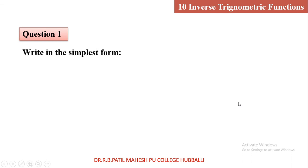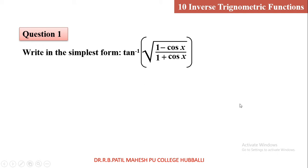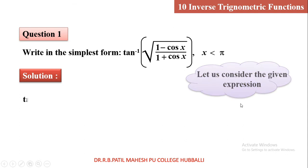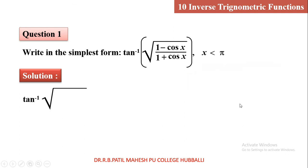Question number 1: write the simplest form of tan inverse of root of (1 minus cos x) upon (1 plus cos x), where x is less than pi. Let us consider the given expression as it is: tan inverse of root of (1 minus cos x) upon (1 plus cos x), where x is less than pi.